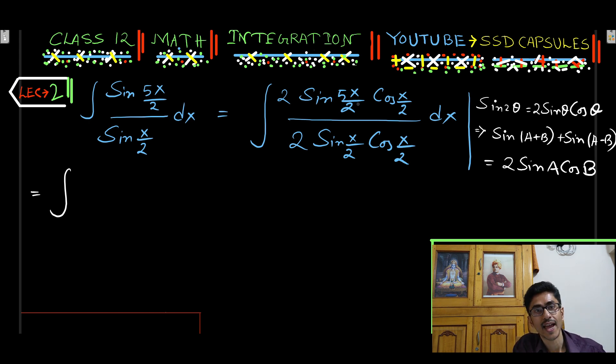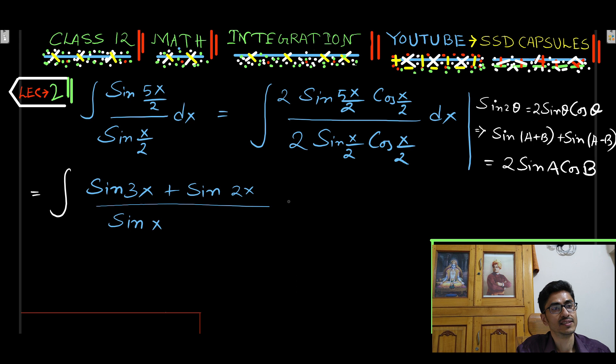The numerator is 2 sin a cos b, so sin a plus b: sin 5x by 2 plus x by 2, if we add this is 6x by 2 so 3x. Plus sin of a minus b means 5x by 2 minus x by 2, so 5x minus x is 4x by 2 means 2x. In the denominator simply sine 2 theta so sine x dx. See the integrand becomes more easy to solve.